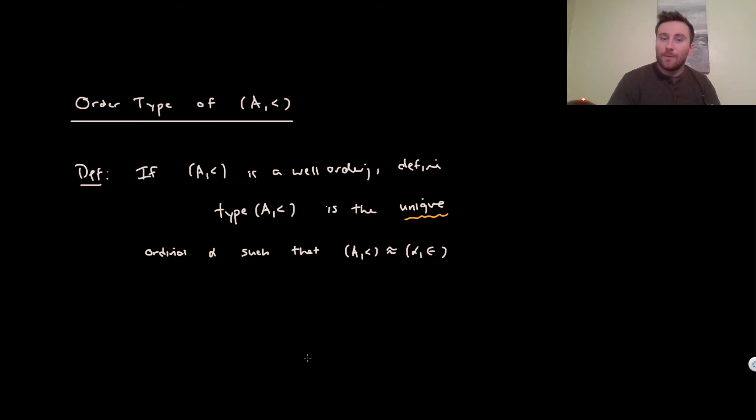Up until this point, we defined ordinals as transitive sets well-ordered by epsilon. But maybe it was the case that these ordinals just existed in the ether of the set theoretic universe, and there's no relationship between these ordinals and other types of well-orderings.